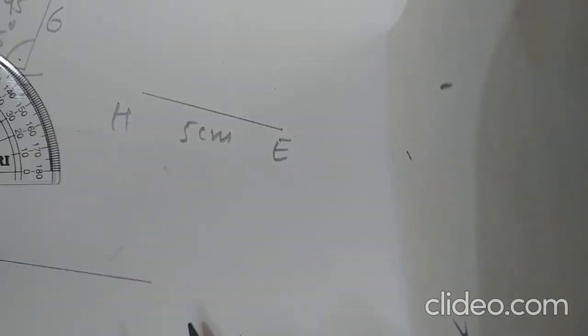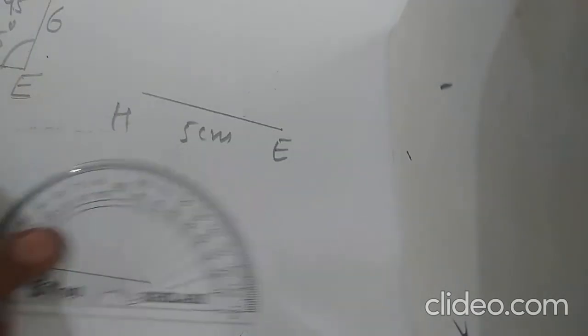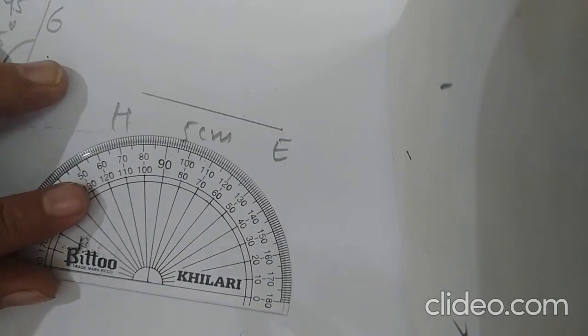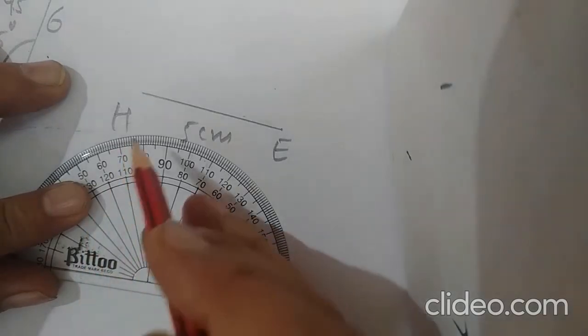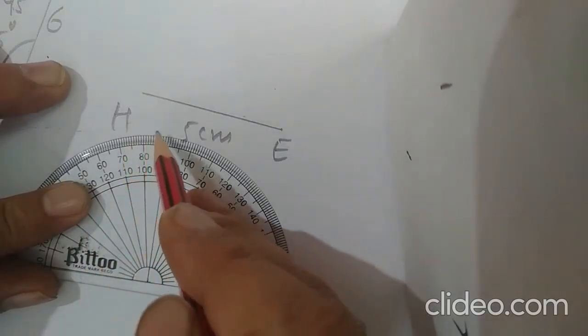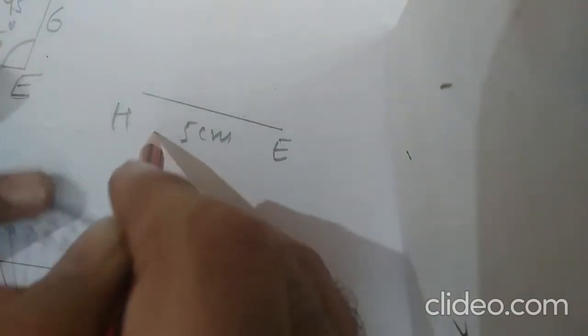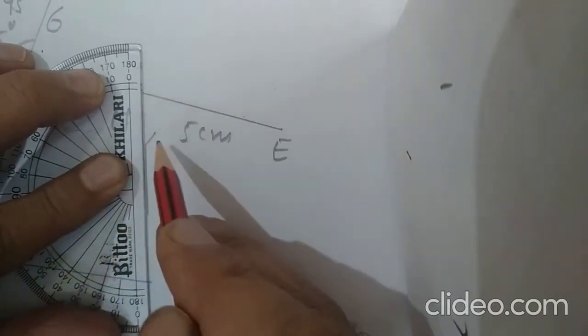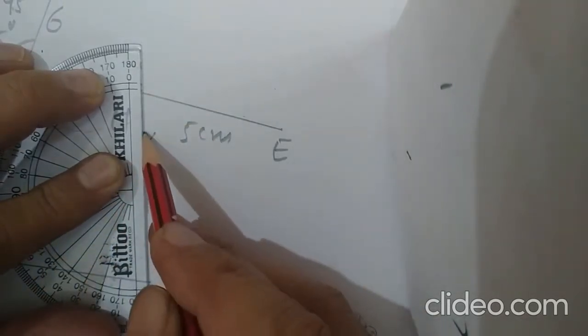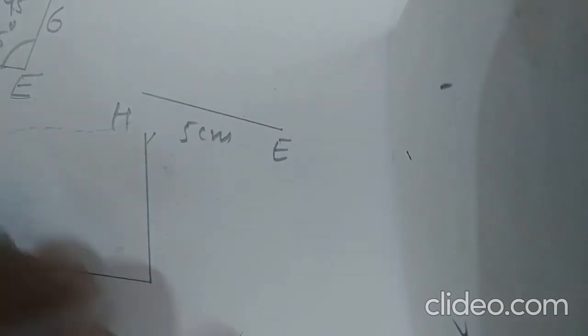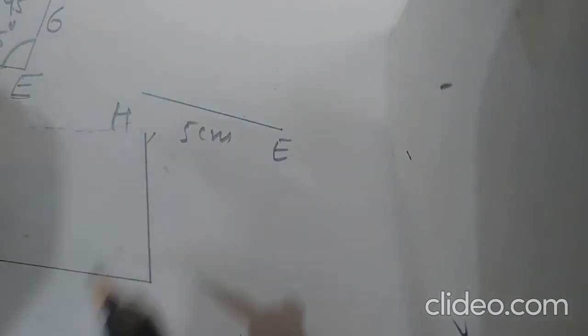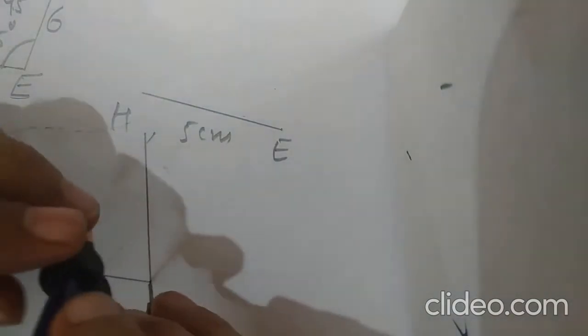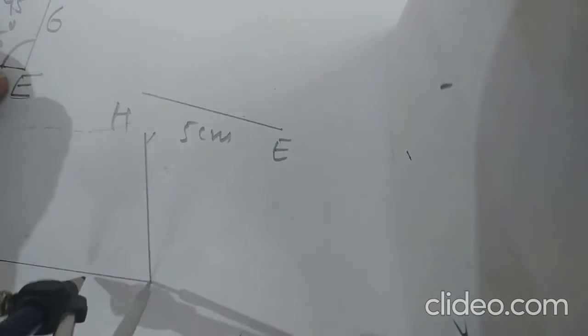At point E, I need to draw 85°. This is 90° and this is 85°. We can use the protractor (D) for this. Mark 85° at E — this is 85°.